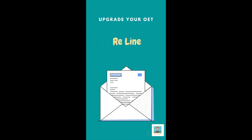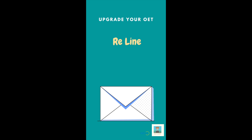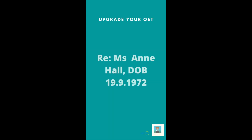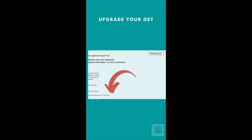Professional letters also have a re-line at the beginning, so you'll need to include one in your OET writing. Once you've written the address, the date, and addressed it to the person, you write your re-line. For example, the patient's title, name, and date of birth — and that comes just here — and tells your reader what your letter's all about.